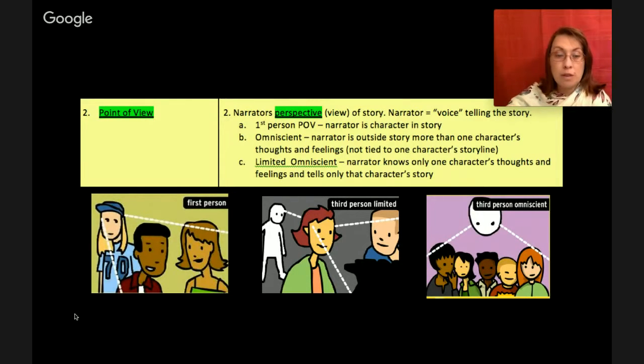On the screen here I have some pictures to help us understand these ideas. First we have first person. That's where one character in the story is telling the story. Notice that in that slide a character in the story is the view that we can see through. The next is third person limited. Now with third person limited that means that the narrator is outside of the story and can only see through one character's eyes, their thoughts and feelings. The last one is third person omniscient. Now this is where the narrator, that floating head at the top there, the narrator knows what multiple characters are thinking and feeling and what they're doing.